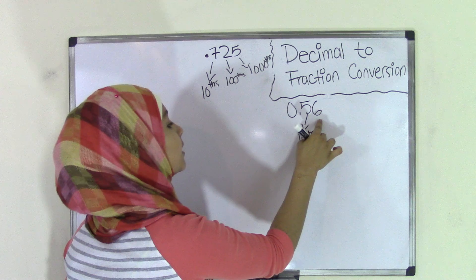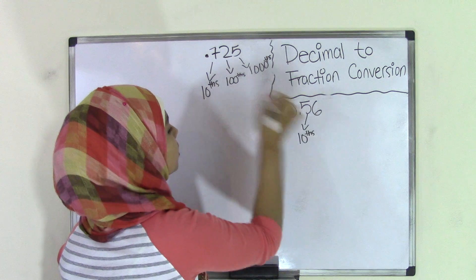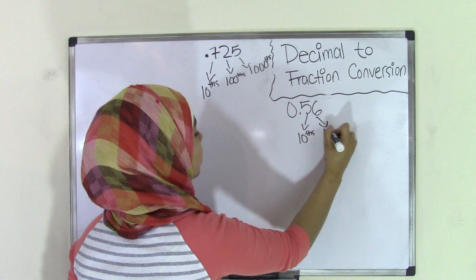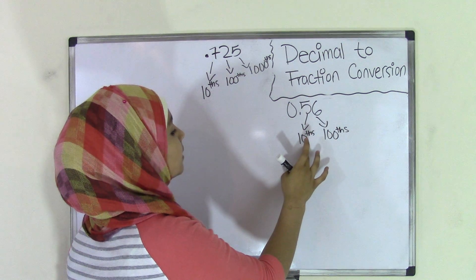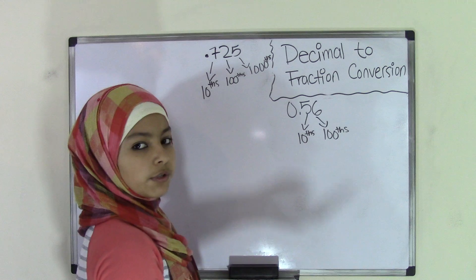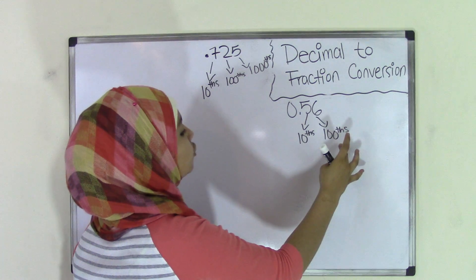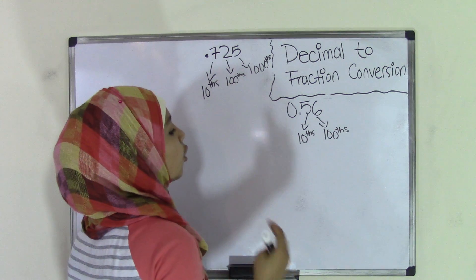And the second digit, which is 6 in this case, is going to be the hundredths place value. So that means 5 is in the tenths place value or 5 over 10, and 6 is in the hundredths place value or 6 over 100.